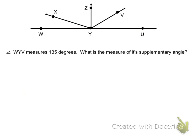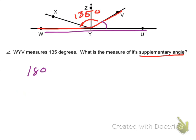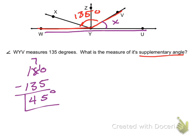Let's look at another example. Angle WYV measures 135 degrees. What is the measure of its Supplementary Angle? Supplementary has to add up to 180 degrees, so if I'm looking at the straight line, the only other angle left is VYU. I'm going to take 180 minus 135. Borrowing gives me 45 degrees as my answer.